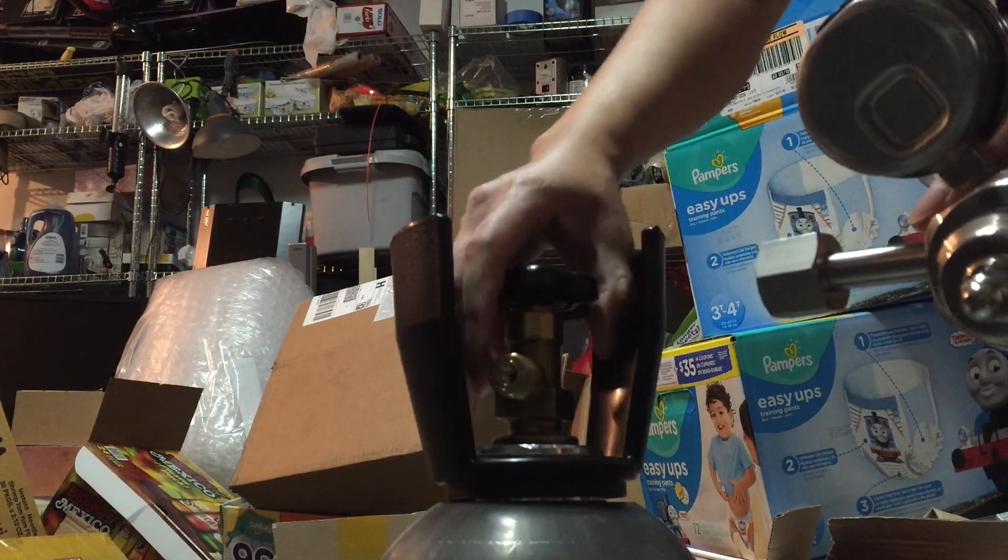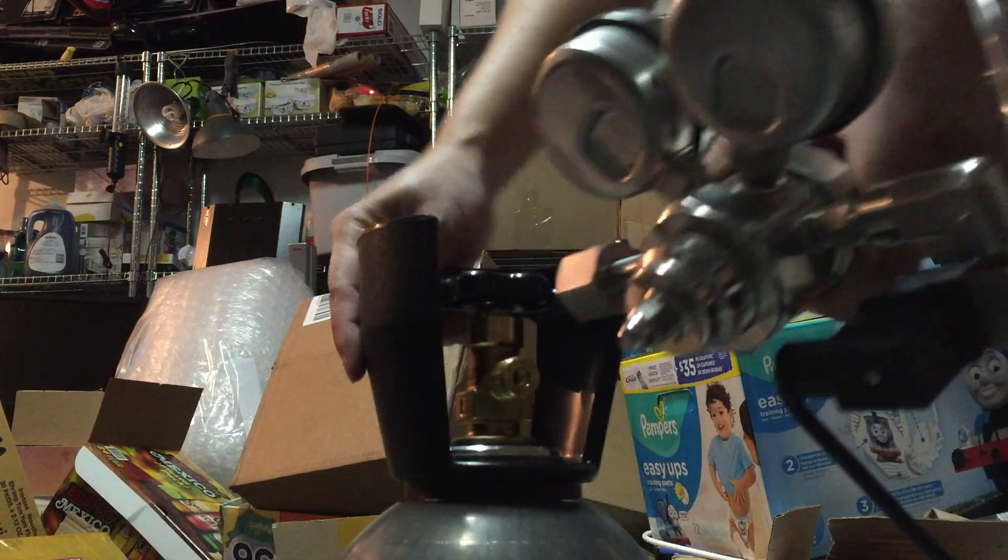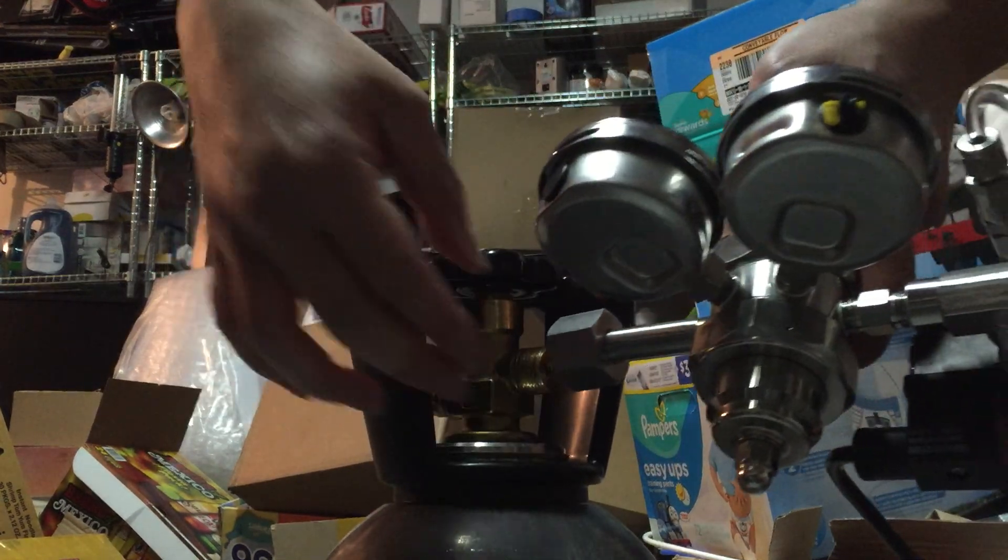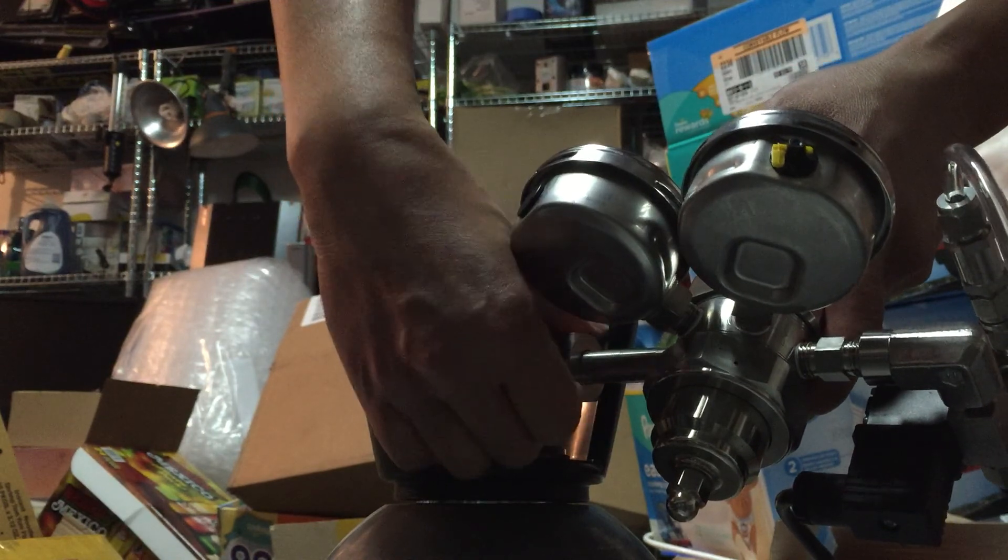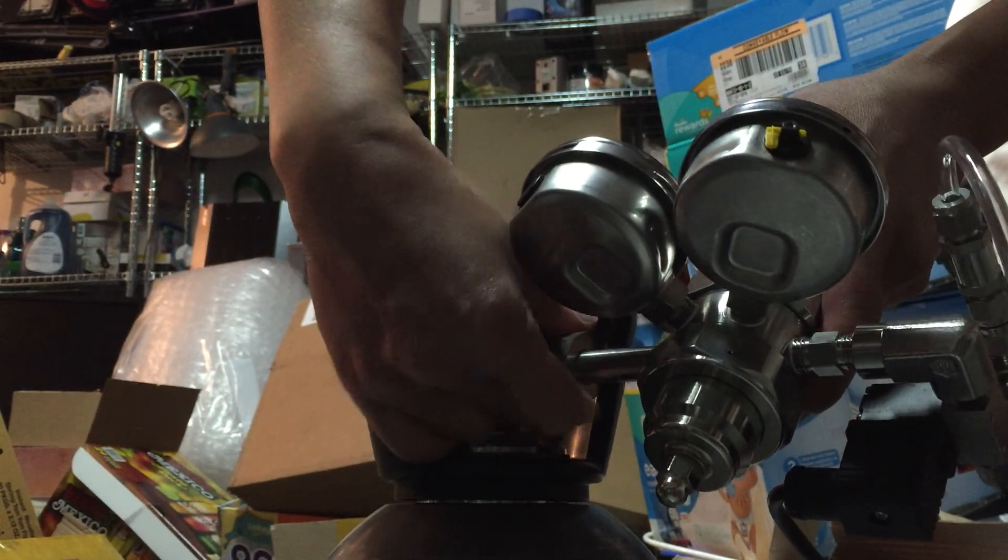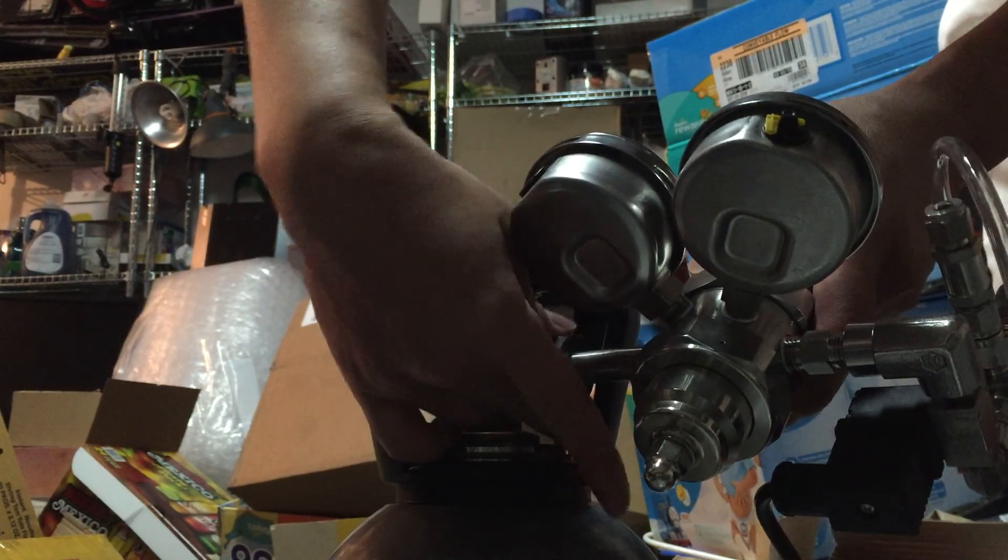Then, it's a tank here. You attach the regulator to the tank. Now, hand twist it all the way until the two ends may connect.